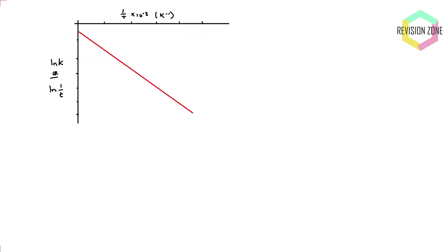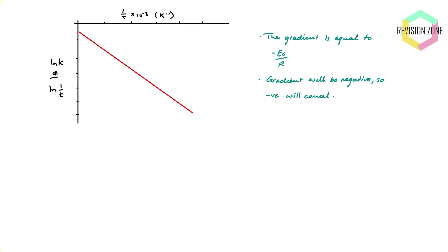The gradient of this graph equals −Ea/R, where R has units J K⁻¹ mol⁻¹. The gradient will be negative, which is important because the activation energy cannot be negative — the negative gradient cancels the negative sign in −Ea/R, giving a positive Ea. The unit of the gradient works out to be Kelvin (K), which you can derive from the fact that lnK has no units and the x-axis has units of per Kelvin.